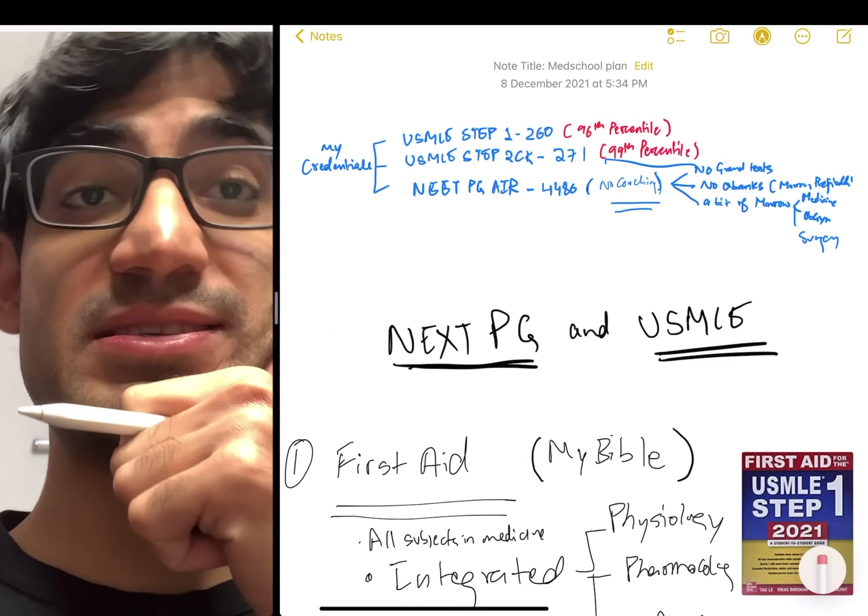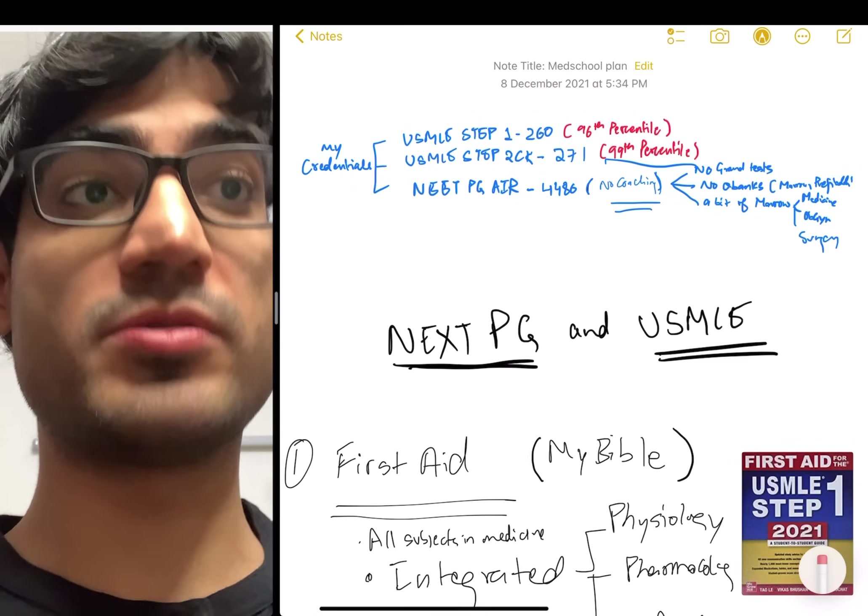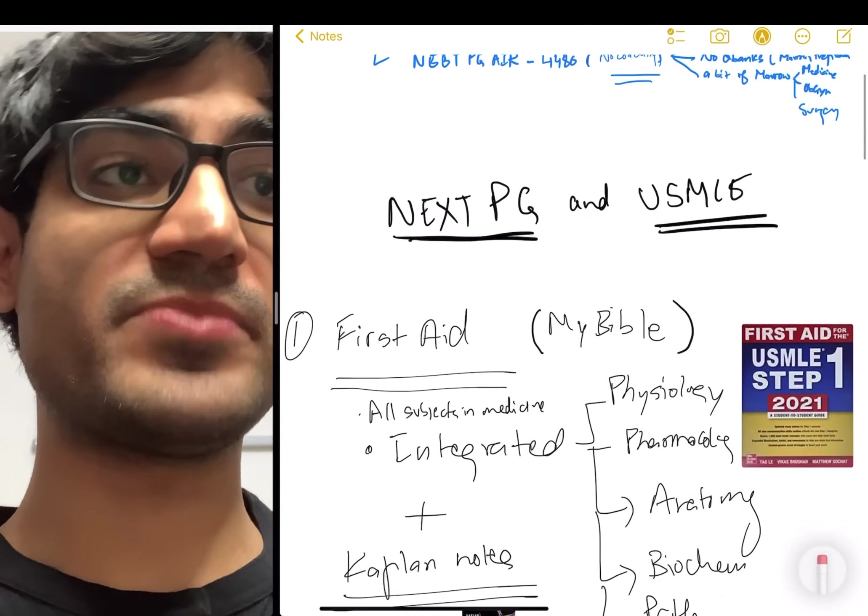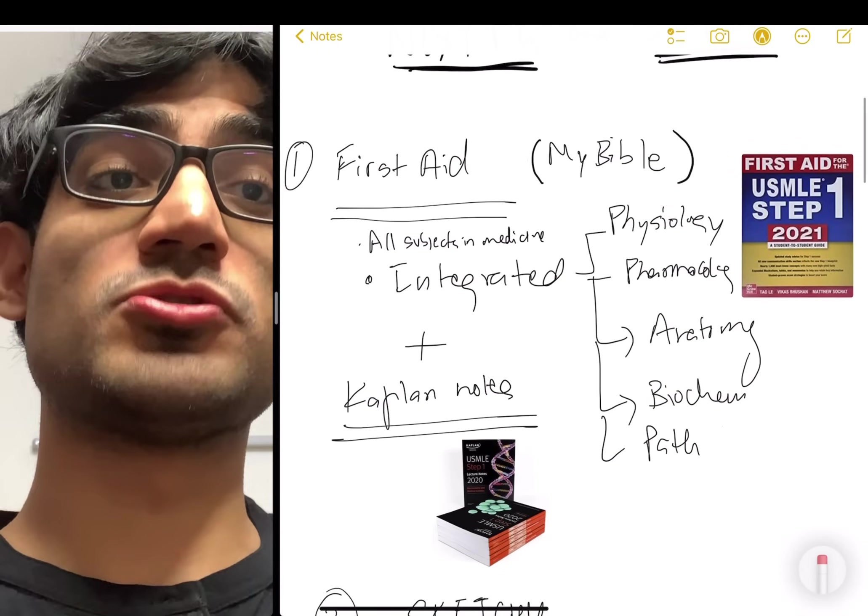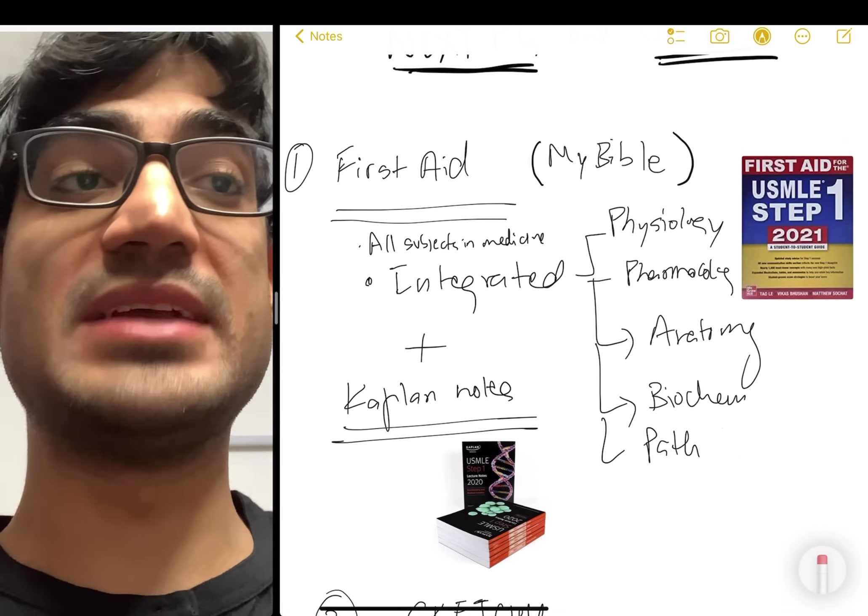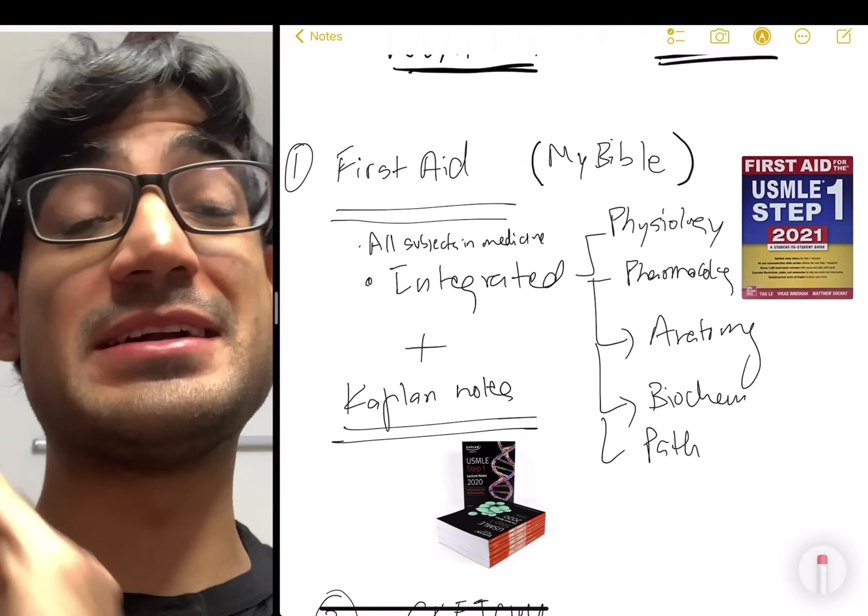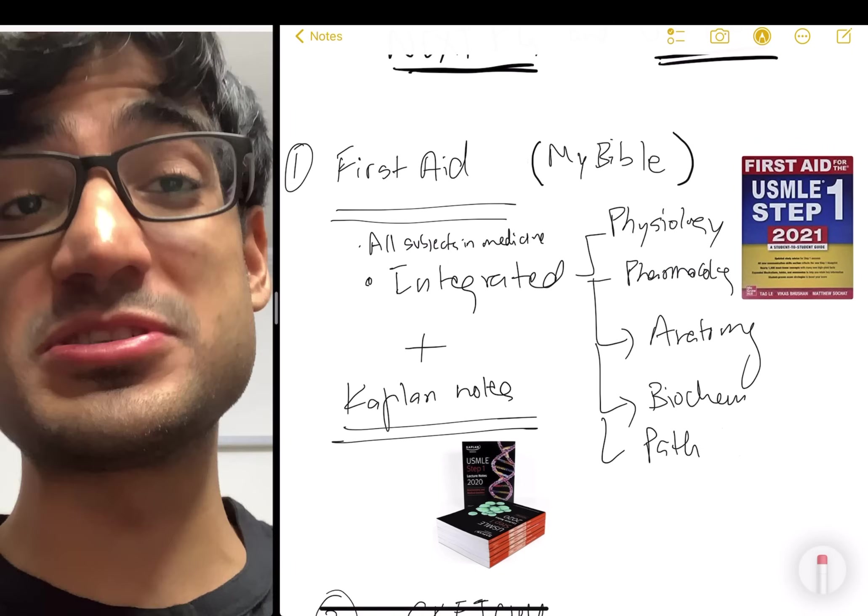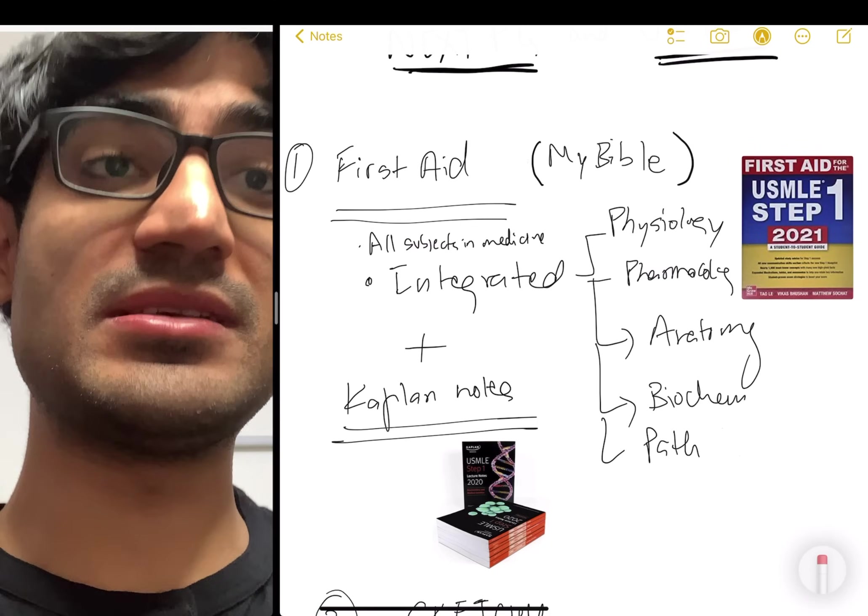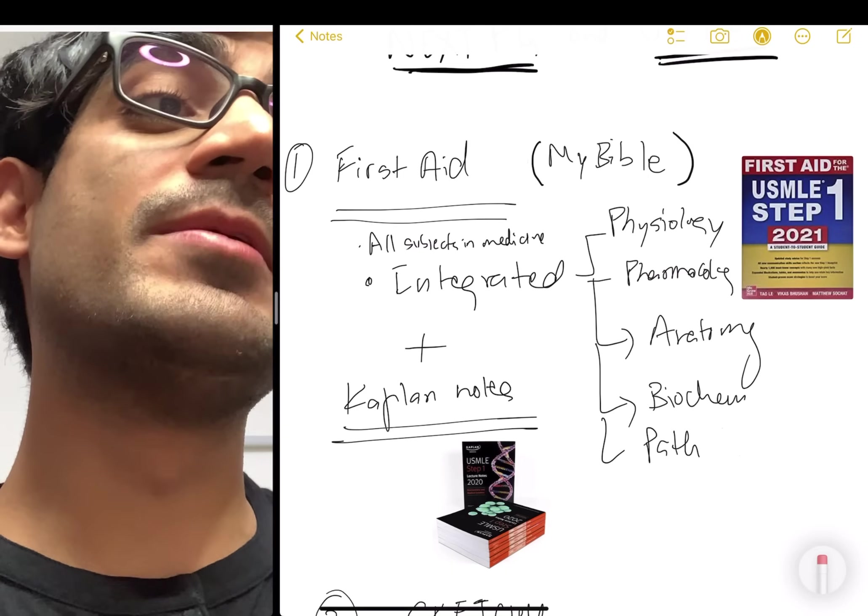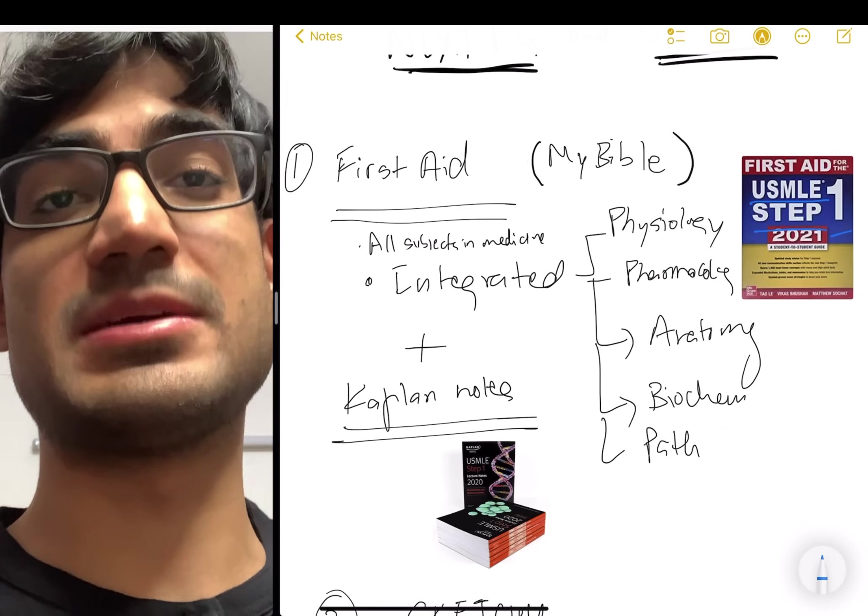So let's talk about the resources that helped me succeed in medicine and score these ranks. The first resource I would recommend everybody is First Aid. This is my Bible for medicine because First Aid is that one single book in all of medicine that literally contains almost anything and everything you need to know. And the best part is it is integrated. The First Aid I'm talking about is First Aid for USMLE Step One, not Step Two CK.